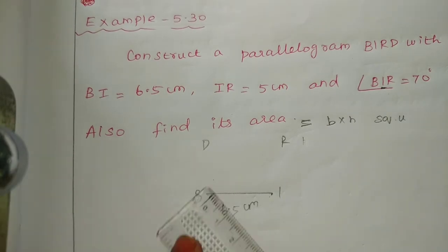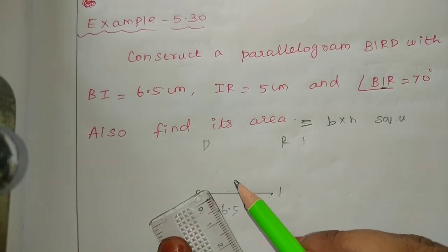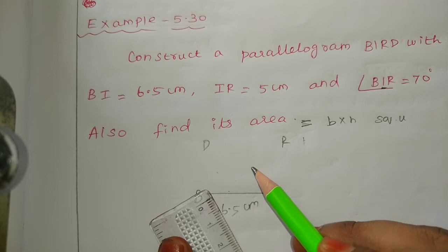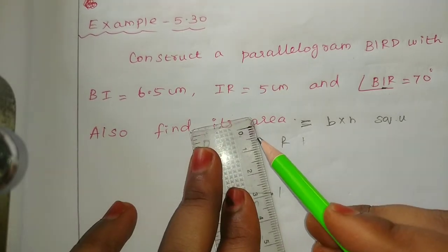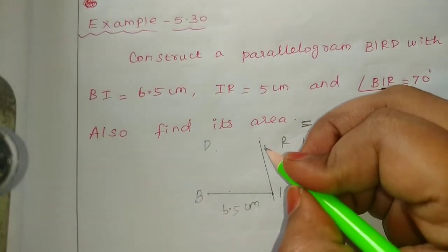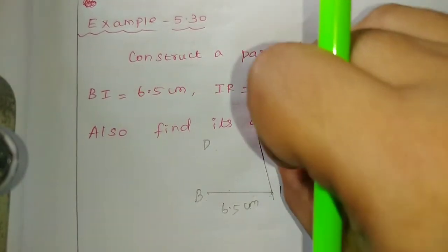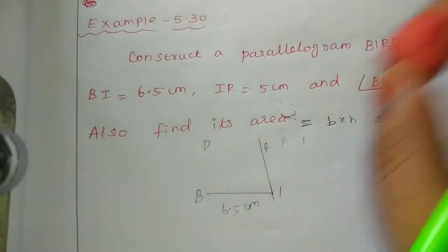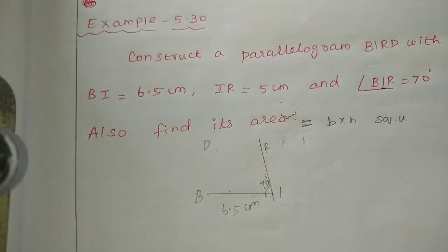70 degrees is acute. The scale reads: 10, 20, 30, 40, 50, 60, 70. So this is the same. Let's do the same thing — marking 70 degrees.